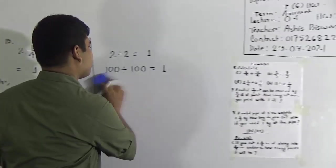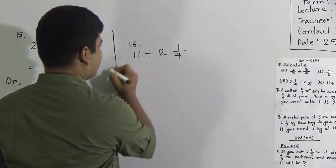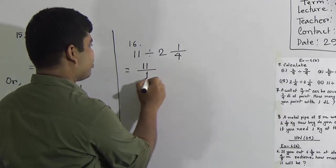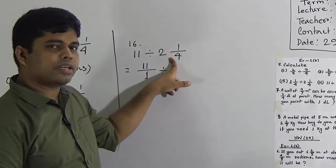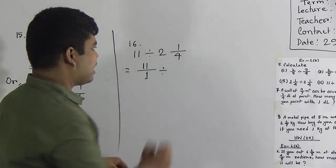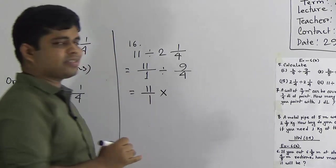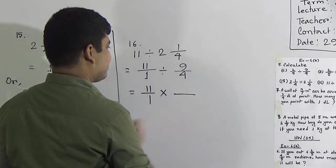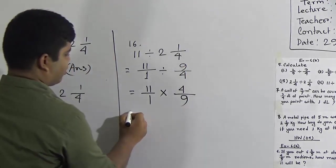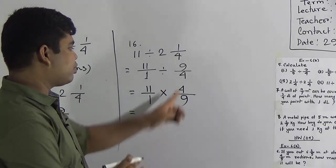Question 15 is done. Next, question 16: 11 divided by 2 and 1/4. Every whole number has a denominator of 1, so we write 11/1. Convert the mixed fraction to improper: 2 × 4 = 8, plus 1 = 9, so 9/4. Now we have 11/1 divided by 9/4. Change division to multiplication and reverse the second fraction to 4/9. Notice there is no common divisor between 11 and 9, or between 4 and 9.